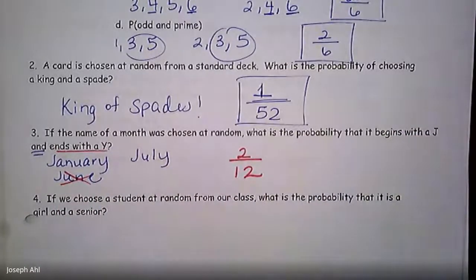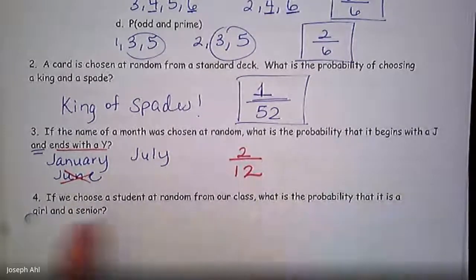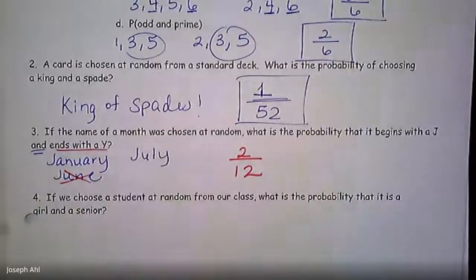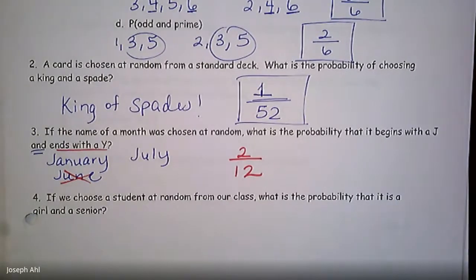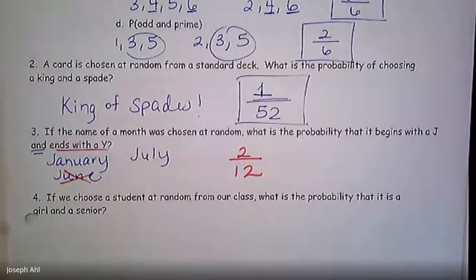We're going to skip question four because the answer depends on which class you're sitting in — if a student is chosen at random, the probability of choosing a girl and a senior would vary by classroom. Try the Probability homework 2, let us know if you have any questions. Next lesson we're going to bring in the word 'or' with probability. Take care!